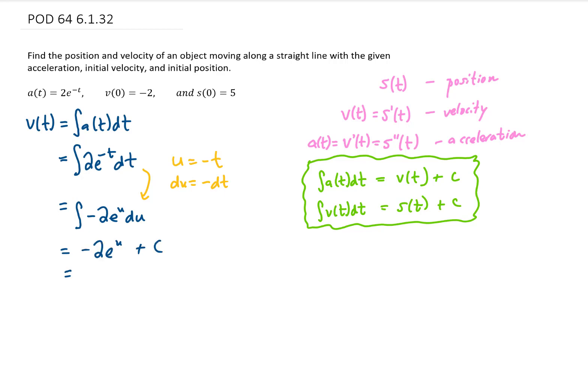The integral of e^u du is just e^u. So our final integral here when we substitute back is negative 2e^(-t) plus some constant. And that is our velocity function. Of course, we'd like to know what the value of this constant is. To find the value of that constant, we're going to use our initial condition.